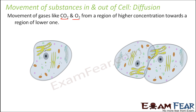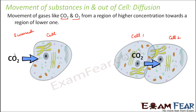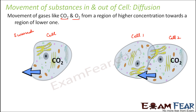For diffusion, consider two scenarios: one cell interacting with its surroundings, and two cells interacting with each other. If the concentration of carbon dioxide is more in the surroundings, it will move from surroundings into the cell. Similarly, if concentration is more in cell 1, carbon dioxide moves from cell 1 to cell 2. If the concentration is higher inside the cell, it will move outward.